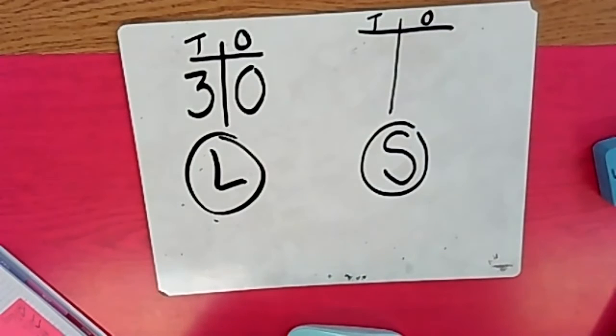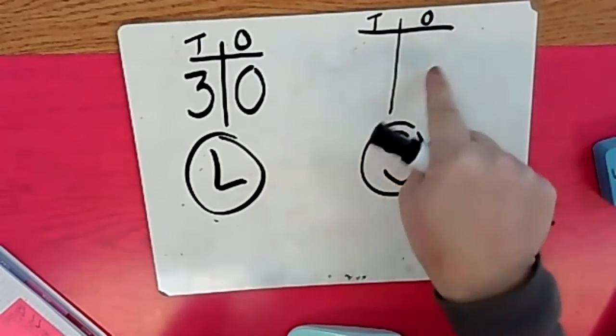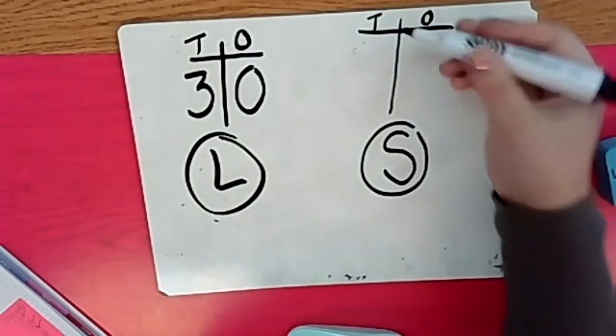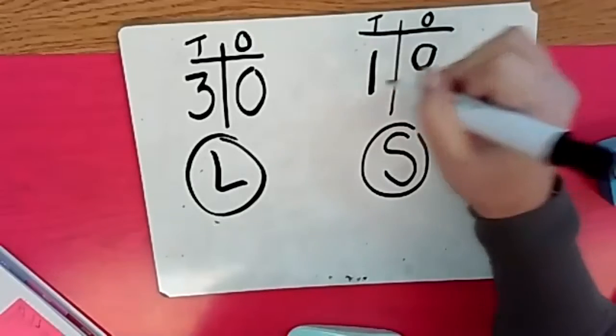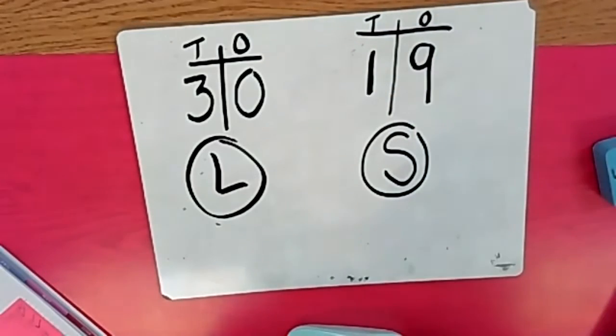Now Sally has 19 crayons. And here I have a question afterwards. What would the 19 look like in here? Yeah, you're right. One here and nine. So one in the tens place, nine in the ones place.